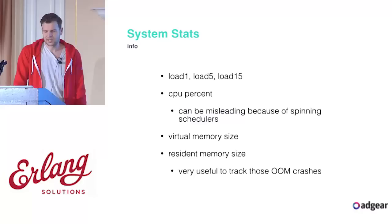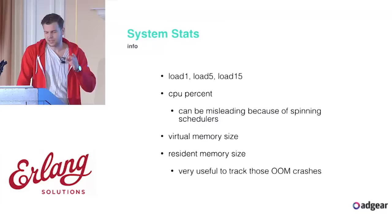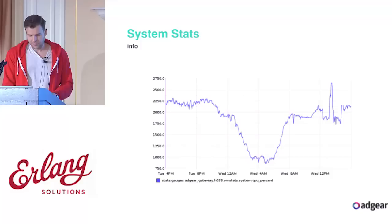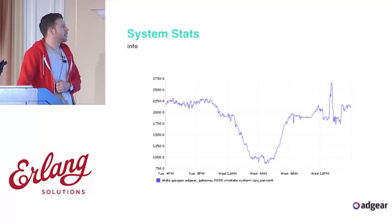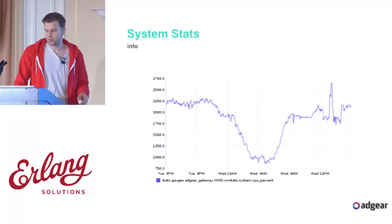SystemStats gives us the load on the machine, CPU percent, virtual memory size, and resident memory size. That's really useful especially if you have crashes and want to see what's happening — you can see if there's a slow or fast memory leak. That said, CPU percent is hard to use for judging performance improvements because the VM is always spinning the schedulers.